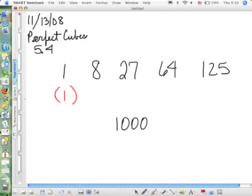So the cubed root of one is one. Eight. What number multiplied by itself three times gives you eight? Two. The cubed root of eight is two. What's the cubed root of 27? Three. 64. Four. 125. Five. One thousand. Ten. Good.